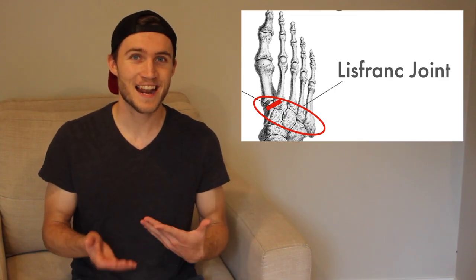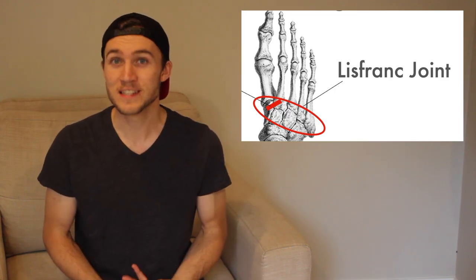So now we know where a Lisfranc injury happens — right here. But what exactly is it that happens to this area? There are multiple types of Lisfranc injuries that can happen to the foot. The most likely one that ETN sustained was an indirect injury where there was no direct trauma or blow to the foot.